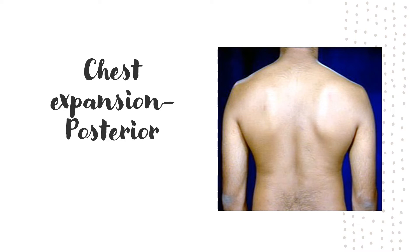For posterior chest expansion, the right upper lobe is accessible only from the upper back, while from the spine of D2 downwards it is lower lobe territory. Since only a small part of the upper lobe is affected, the posterior chest expansion is likely to be normal in this patient. Posterior chest expansion is significantly affected only when the lower lobe is involved. So for upper lobe consolidation alone, chest expansion from the posterior is usually not much affected.